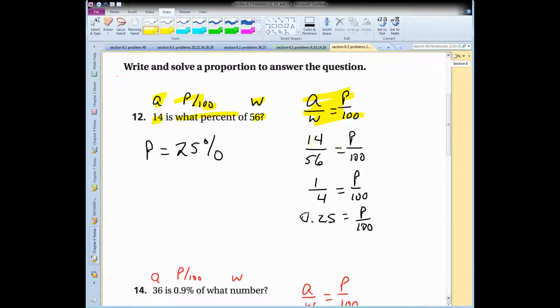And I just plug the numbers in, and I do the work. 14 over 56, I recognize that I could simplify that to one-fourth, and then I already know one-fourth is 25 percent or 0.25. So that is what P is. P is a percent, and it's 25 percent.